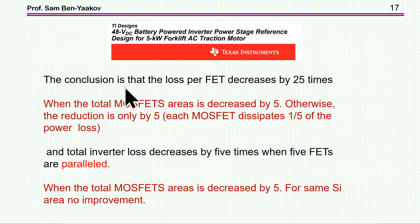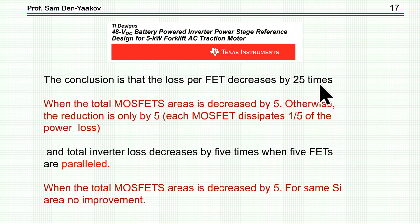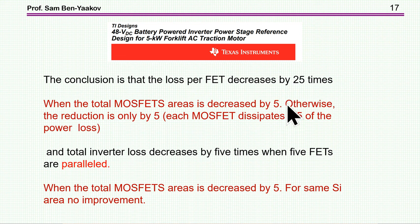Regarding the conclusions in the TI reference design — Texas Instruments states that the loss per FET decreases by 25 when paralleling 5 transistors. This is incorrect as stated. When the total MOSFET area is increased by 5 times — that is, adding 5 transistors in parallel each with the original RDS_on — then yes, the loss per FET decreases by 25. But comparing apples to apples, with the same total resistance for 1 transistor vs. 5, the power per transistor is only one-fifth because you're distributing the same total power among 5 transistors.